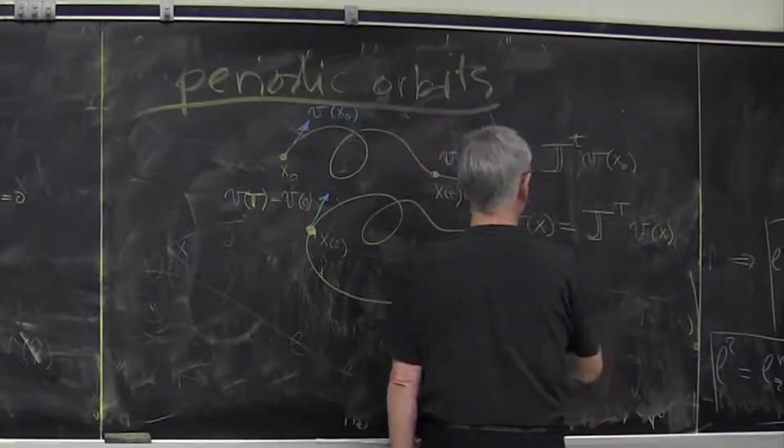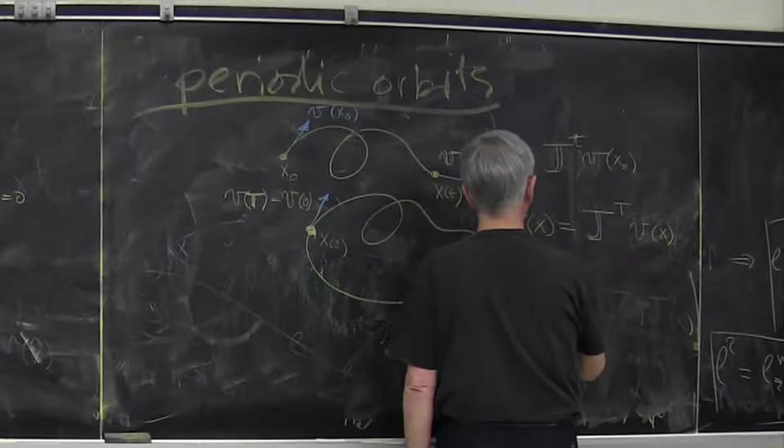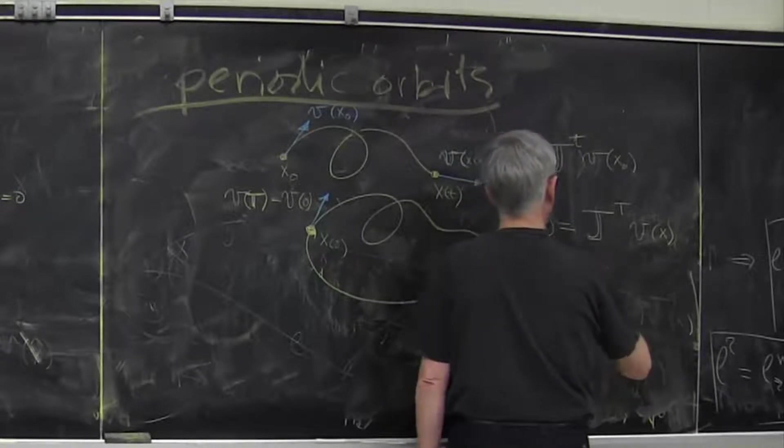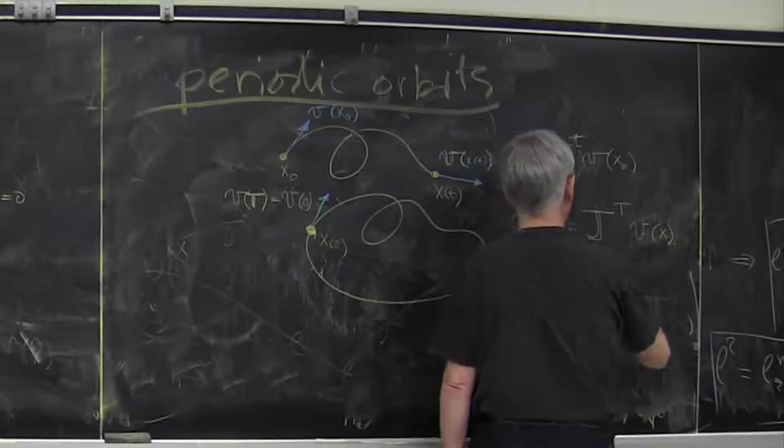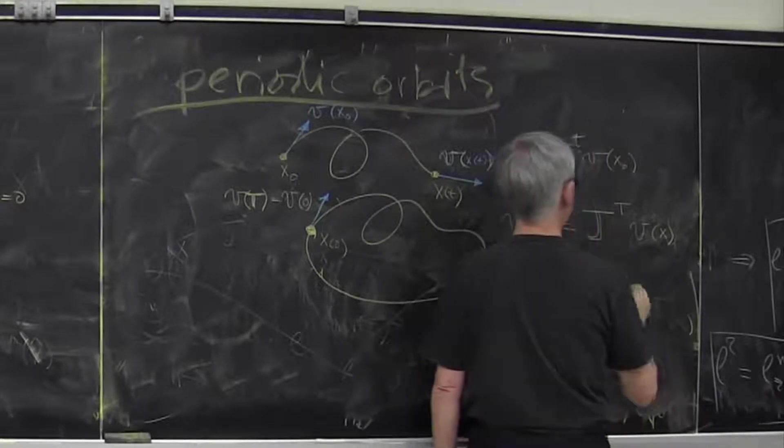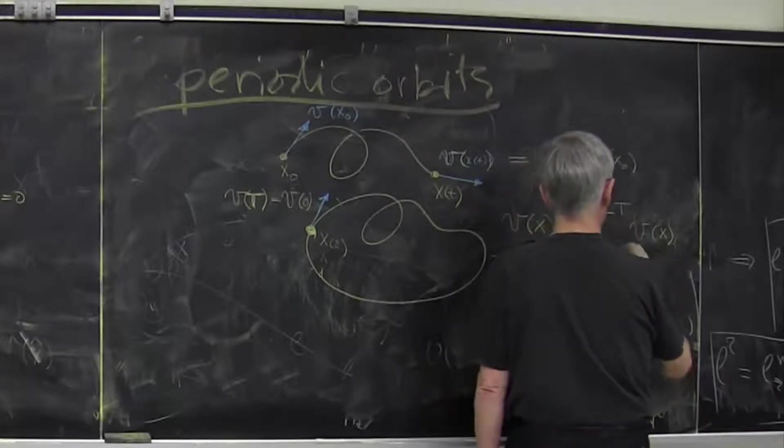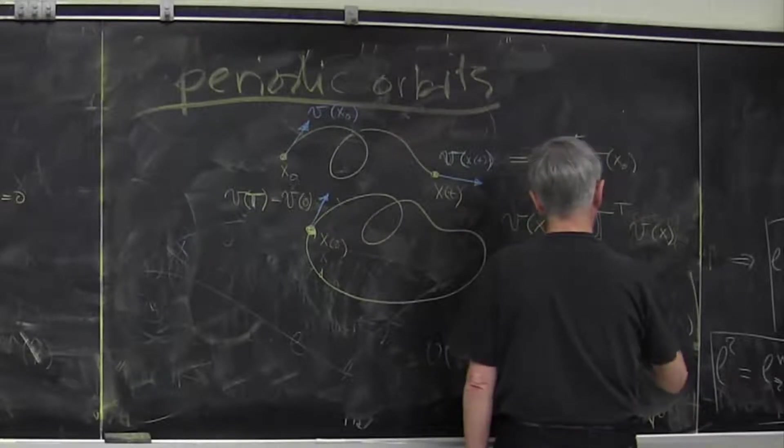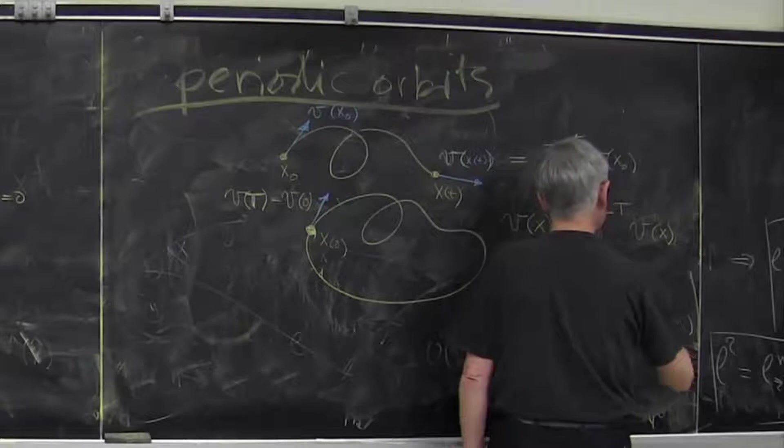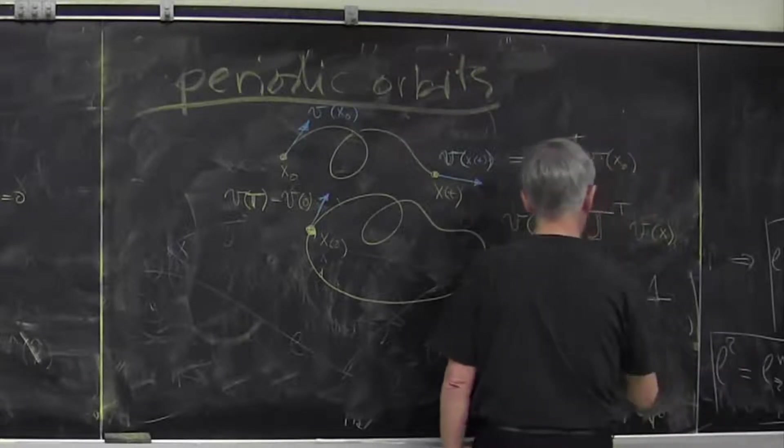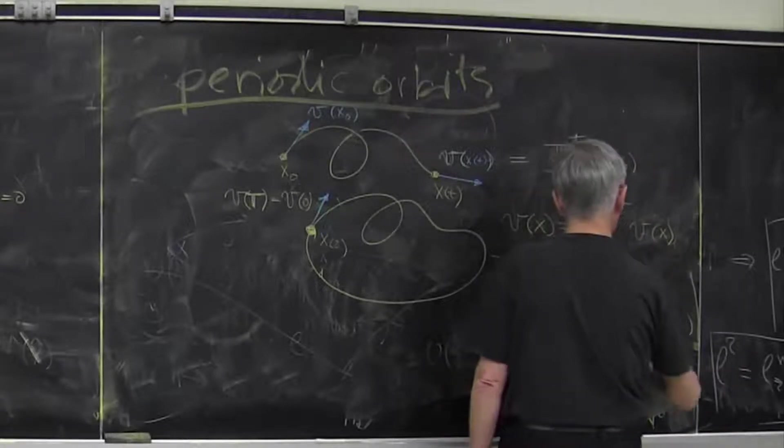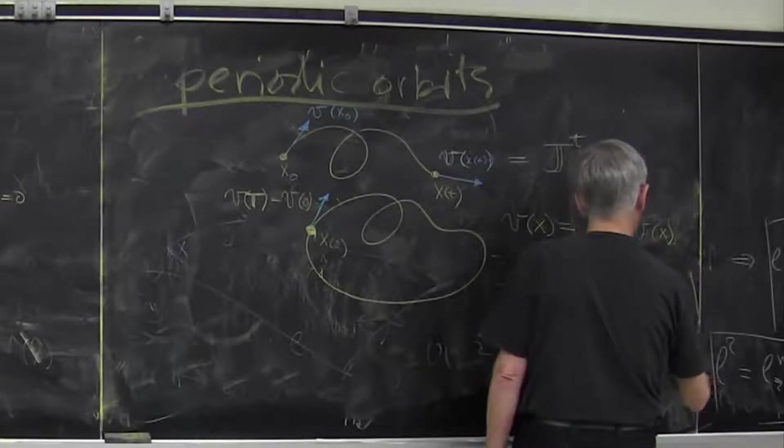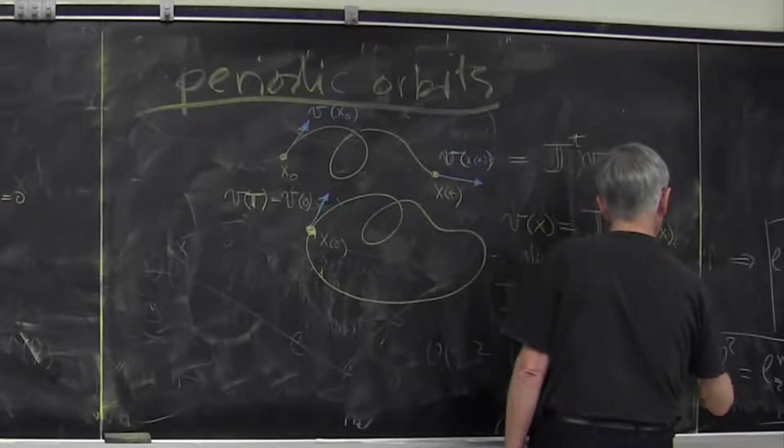In other words, for the periodic orbit I always have one eigenvalue. I already know, so I have one eigenvalue one with eigenvector V of x.